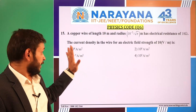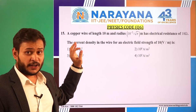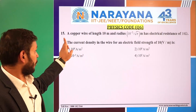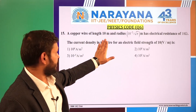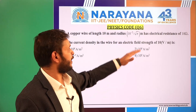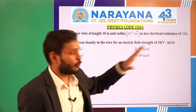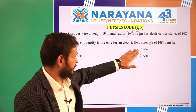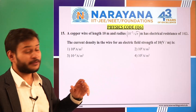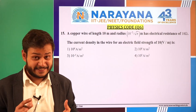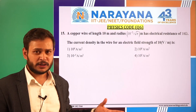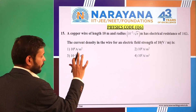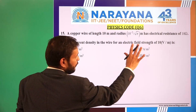Question 15 is from current electricity. A copper wire of length 10 m and radius 10⁻²/√π has electrical resistance of 10 Ω. The current density in the wire for an electric field strength of 10 V/m is — with options given. We have to find the current density, and we know the electric field.